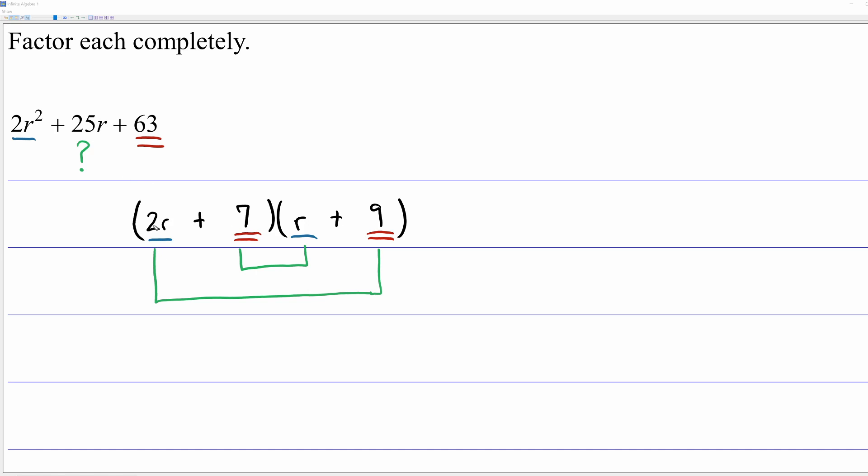So on the outside, we have 2r times 9, which is 18r. On the inside, you have 7 times r, which is 7r. And if you combine these linear terms, 7 plus 18, well, that is 25r. You get what you wanted. So I know this is the correct factorization.